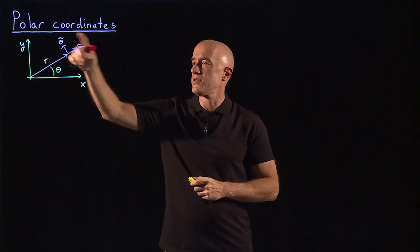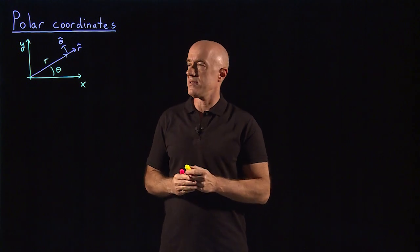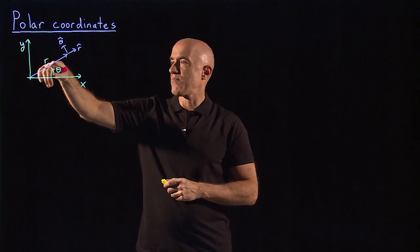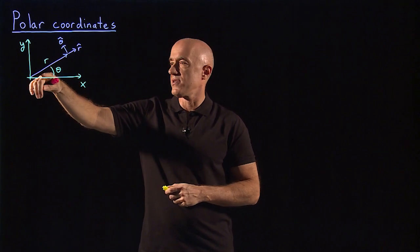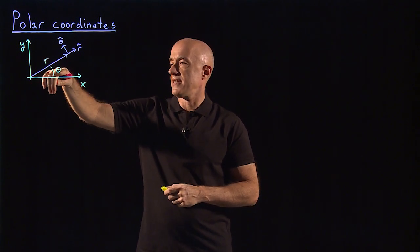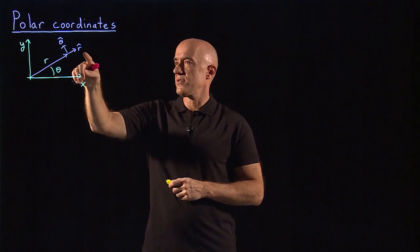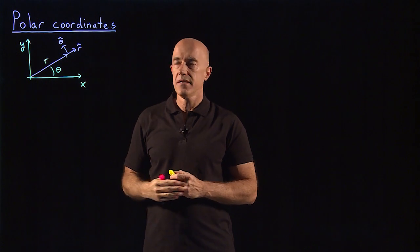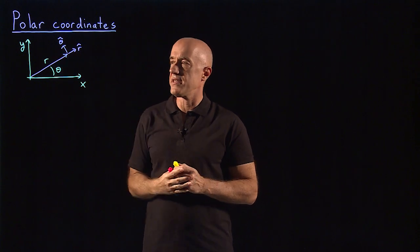Polar coordinates are usually used for rotational motion in two dimensions. We have some vector, and we can represent it in xy coordinates, but in polar coordinates we represent this vector in terms of r and theta. r is the length of the vector, theta is the angle it makes with the x-axis. We also introduce two unit vectors, r hat and theta hat. r hat is in the direction of the vector r, and theta hat is perpendicular to that direction, in the direction of increasing theta.